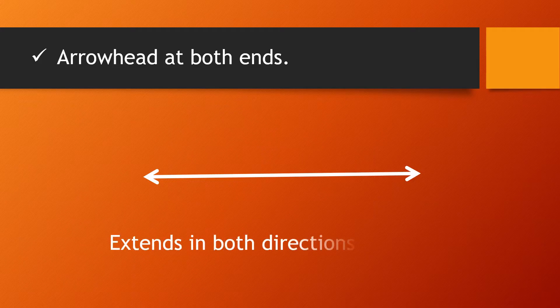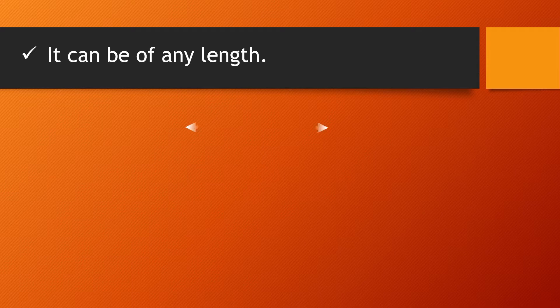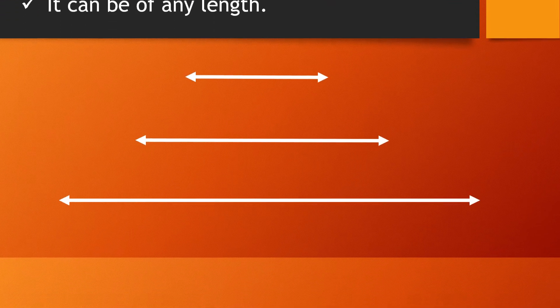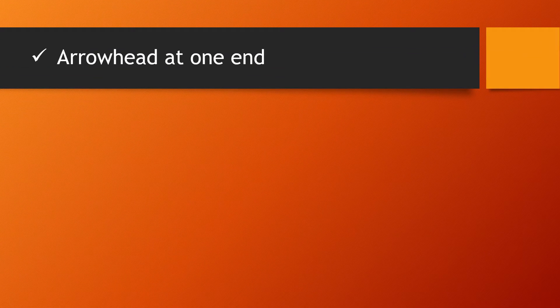A line has arrowheads at both ends, which means it extends in both directions infinitely. It can be in any direction — horizontal, vertical, or diagonal — and it can be of any length: short, longer, or longest.